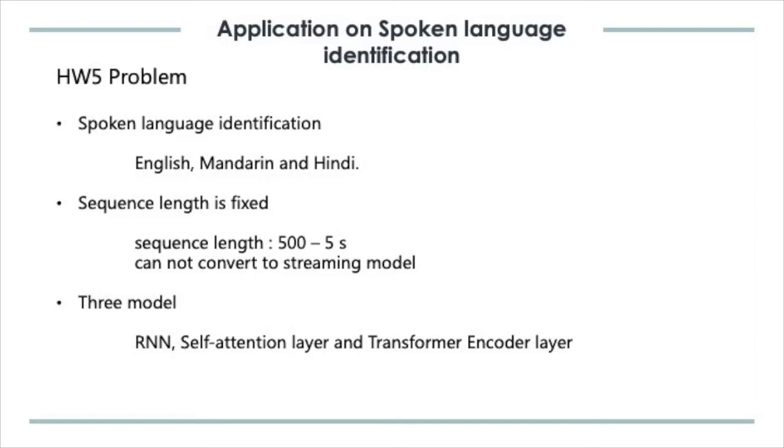Now, we look at our spoken language classification problem, where we apply transformer to classify spoken language signal into three classes: English, Mandarin, and Hindi. When solving this problem, we fix sequence length to 500, which represents 5 seconds of input. We can make the model causal by adding a mask to prevent interaction between current signal and future signal, but we cannot make it a streaming model like RNN.